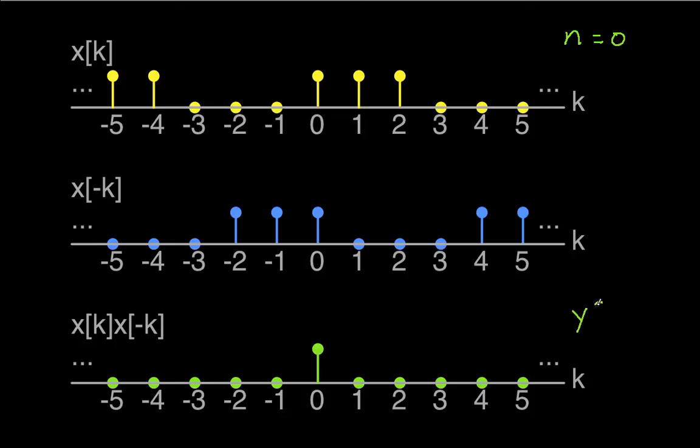So Y of 0 is going to be the sum over one period. And I can make that go from, say, 0 to 5, or if I want to, I can make it go from minus 3 to 2. As long as I just sum over one period here, no matter how I do the summation, I'll have a value of Y of 0 is equal to 1.